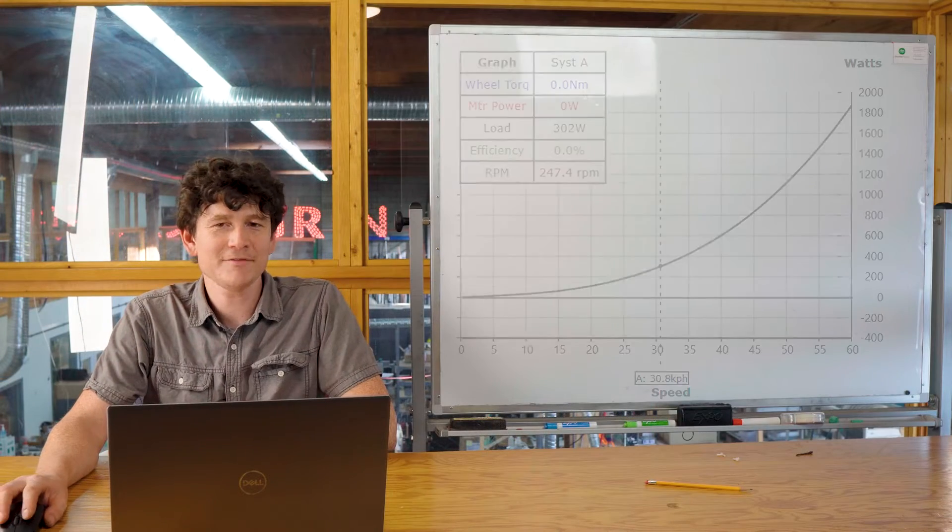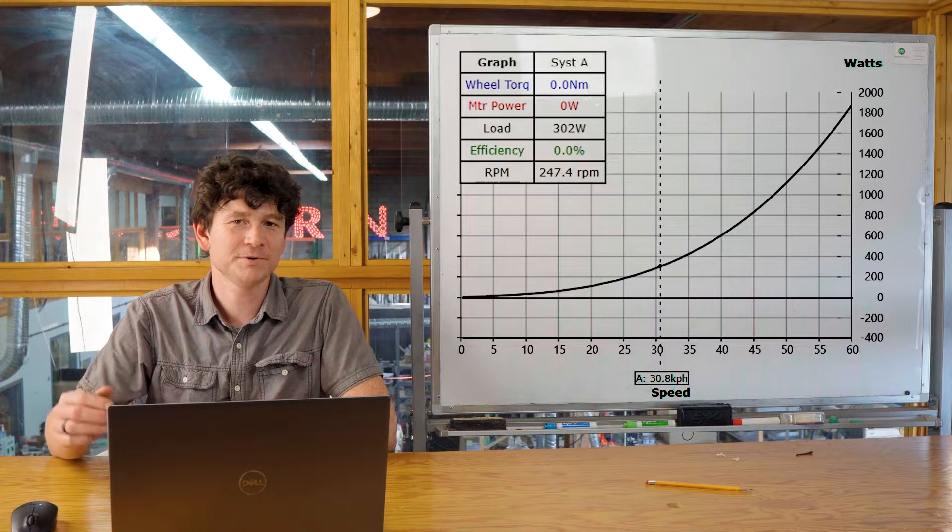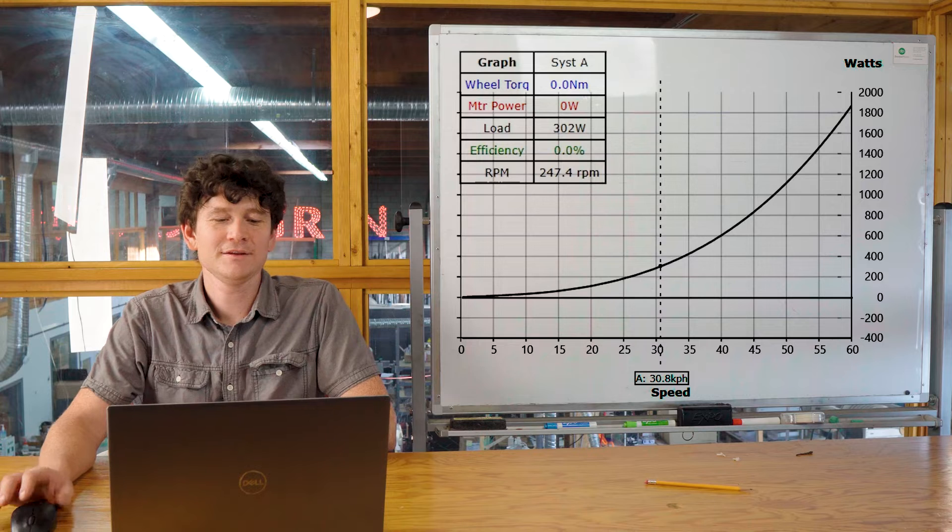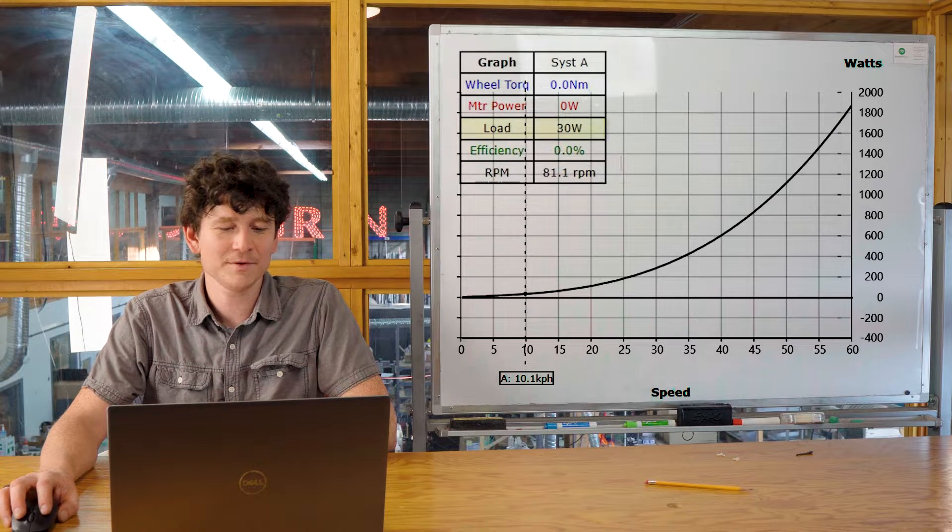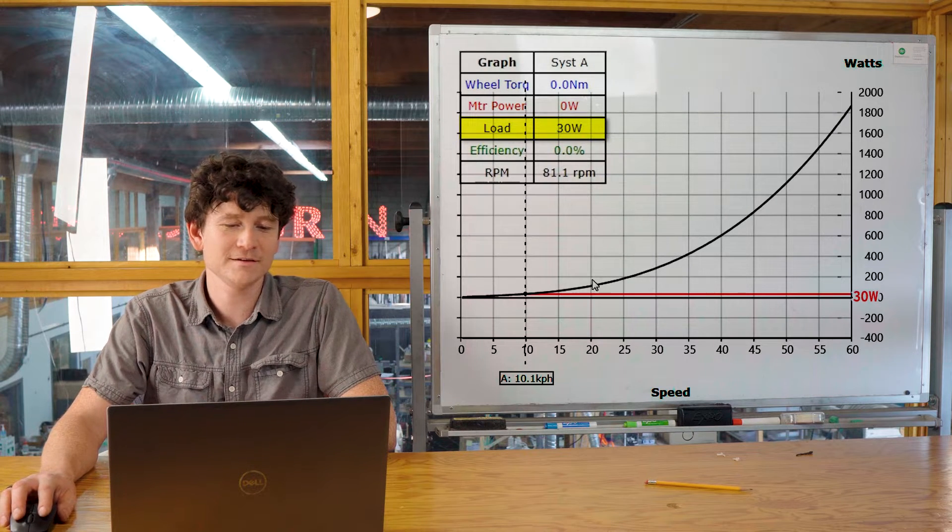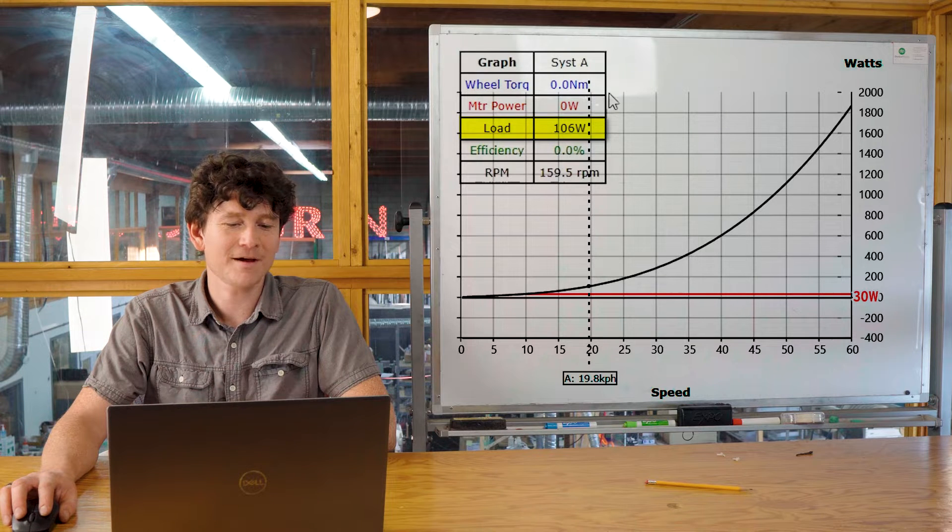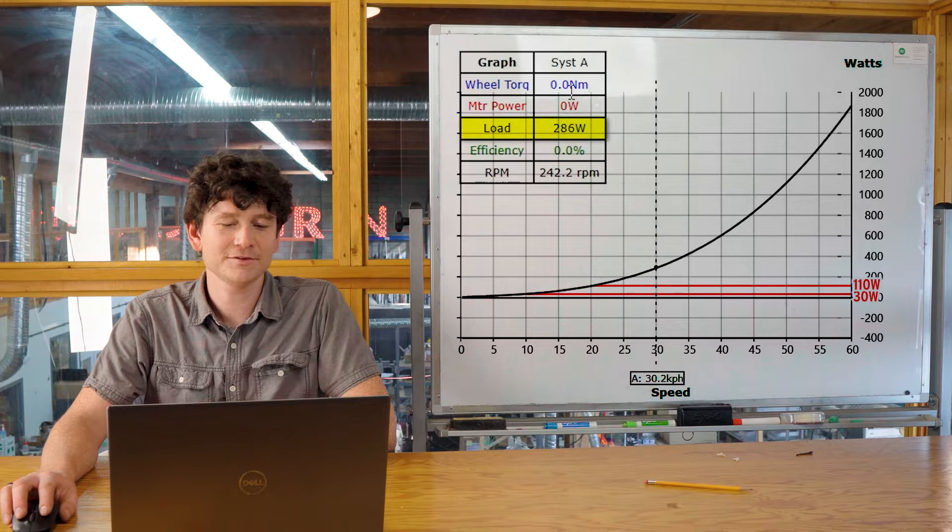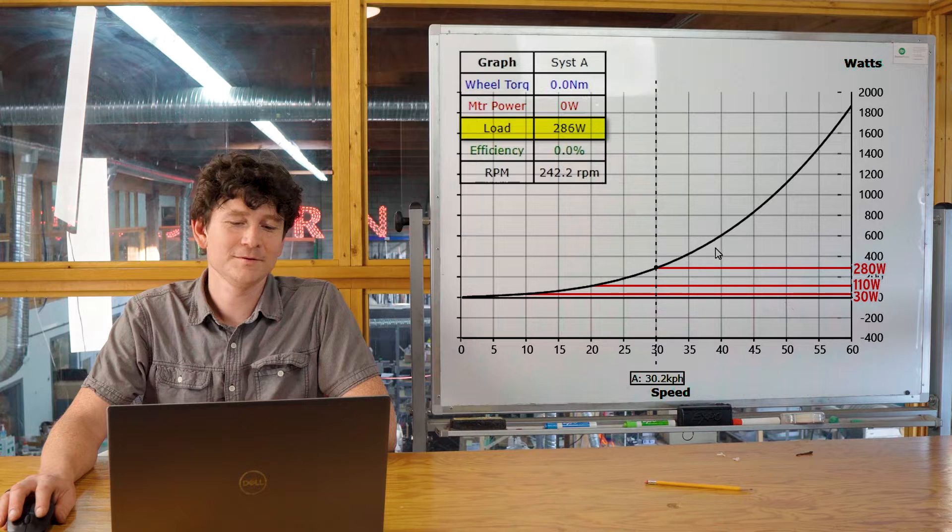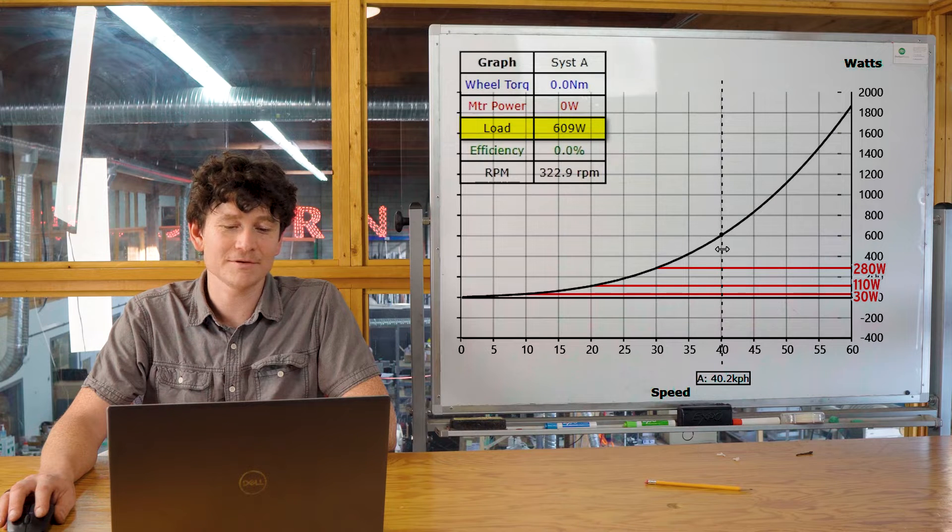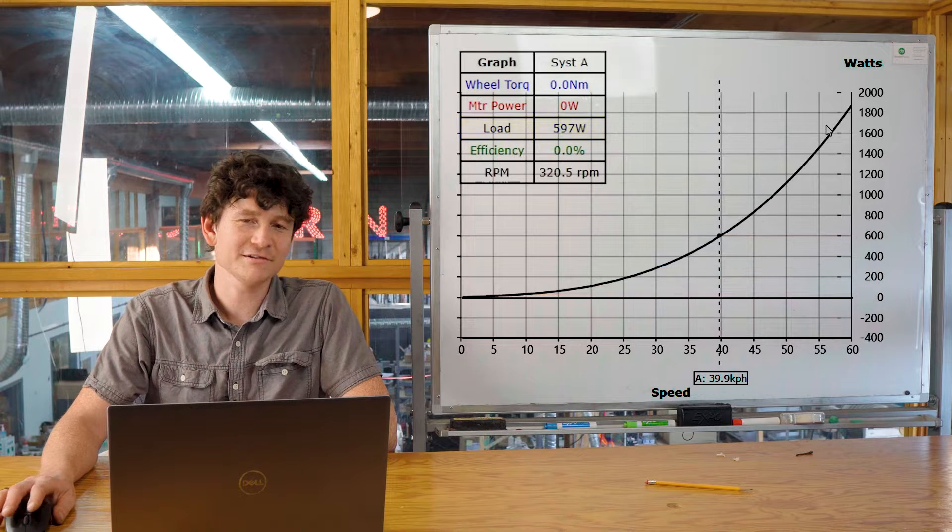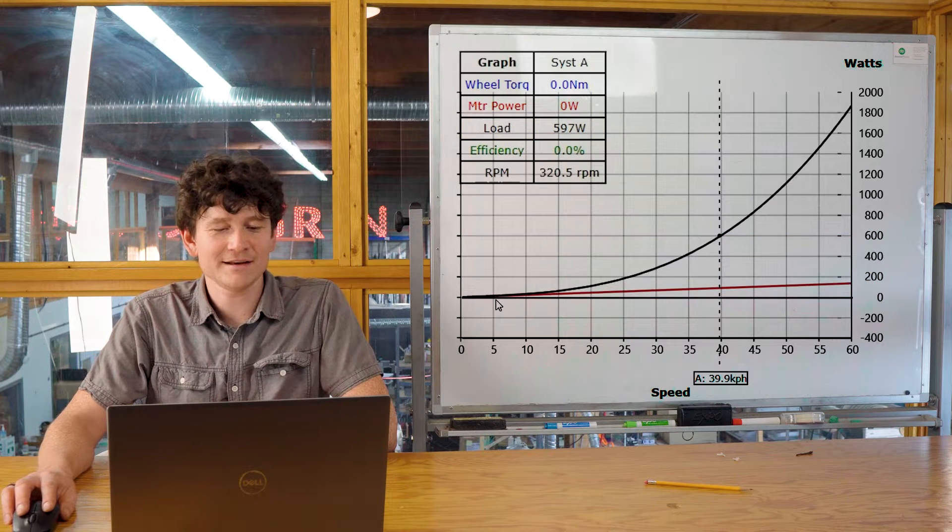If you start plotting this, things get pretty interesting. Here we have a basic graph of the amount of power required to push an average sized rider on an average mountain bike on flat ground with no wind. You can see at low speeds 10 kilometers an hour, we only need 30 watts to move the vehicle. At 20 kilometers an hour, we need 110 watts. As we move up to 30 kilometers an hour, that increases to over 280 watts. To move the bike at 40 kilometers an hour, we need over 600 watts of power. There's this large increase as velocity increases.